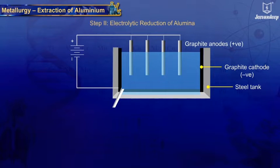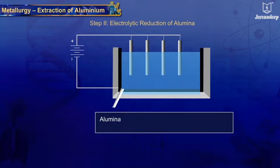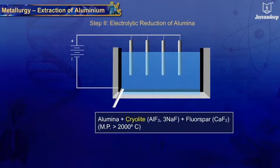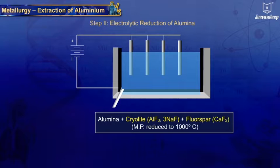The melting point of alumina is very high, greater than 2000°C. Cryolite (AlF3·3NaF) and fluorspar (CaF2) are added to alumina in order to reduce the melting point of the mixture to about 1000°C.